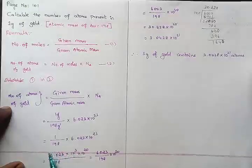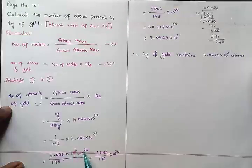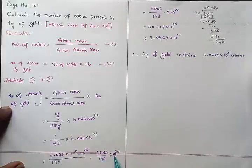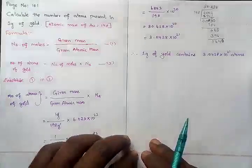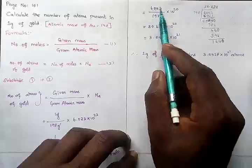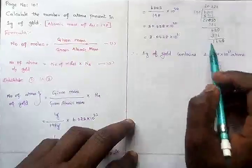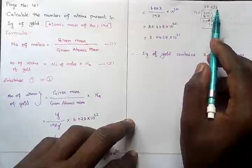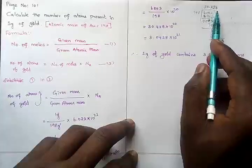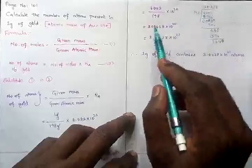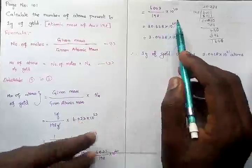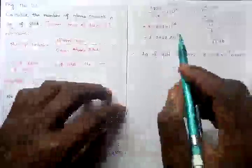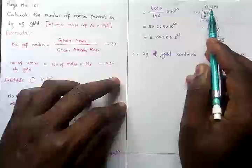Multiplying gives us 1000 × 6.023 = 6023, divided by 198, times 10²⁰. So the expression becomes 6023 / 198 × 10²⁰. Calculating 6023 ÷ 198 gives 30.428. So the answer at this stage is 30.428 × 10²⁰.